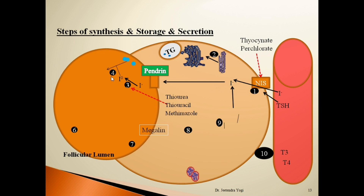Now we come to the fourth step — organification of thyroglobulin, also called iodination of the thyroglobulin molecule. Each thyroglobulin molecule contains about 140 tyrosine residues, which are the substrate for iodine in thyroid hormone synthesis. Due to iodination of thyroglobulin, monoiodotyrosine (MIT) and diiodotyrosine (DIT) are formed. MIT forms when an iodine molecule attaches at the third position of the tyrosine residue, and DIT forms when iodine also attaches at the fifth position.